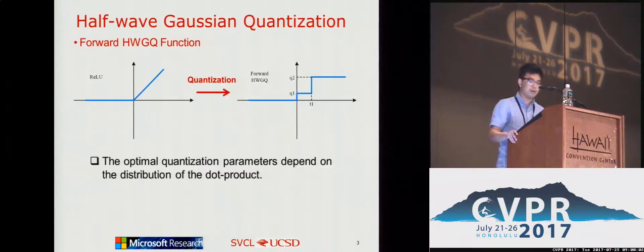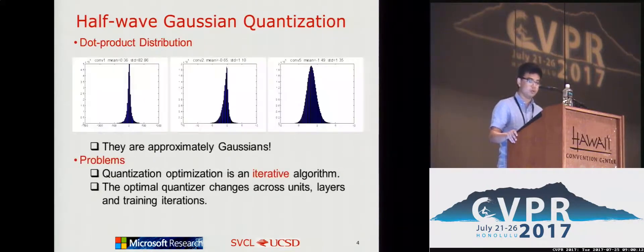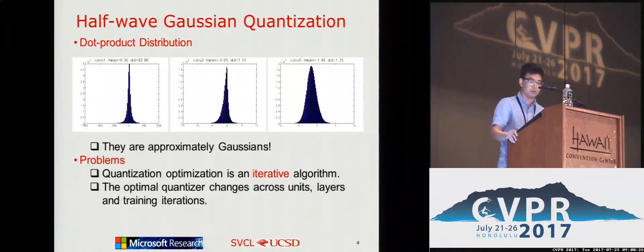Next, we need to find out the optimal quantization parameters. They depend on the dual product distribution. The dual product distributions are approximately Gaussians. There are two problems here. First, quantization optimization is an iterative algorithm — it is infeasible to have iteration during neural network training. Second, those Gaussians have very different means and variances, such that the optimal quantizer changes across units, layers, and training iterations.